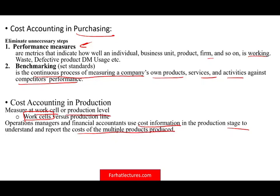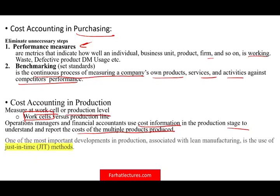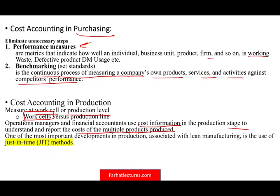Operations managers and financial accountants use cost information in the production stage to understand and report the cost of multiple products produced. Once you know what something is costing you, you can change the work cells — maybe it's cheaper to put only three individuals together, or mix and match skills between individuals. If you know what each individual is producing and how long it takes, you can make those decisions.